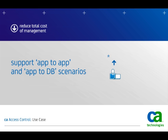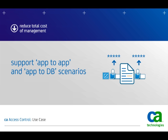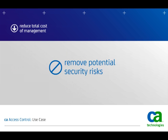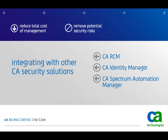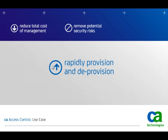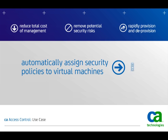In addition, you'll be able to support app-to-app and app-to-DB scenarios where applications can programmatically access system passwords, and in so doing, remove hard-coded passwords from scripts that are potential security risks. And by integrating with other CA security solutions like CA RCM, CA Identity Manager, and CA Spectrum Automation Manager, you can rapidly provision and deprovision across your organization, as well as automatically assign security policies to virtual machines.